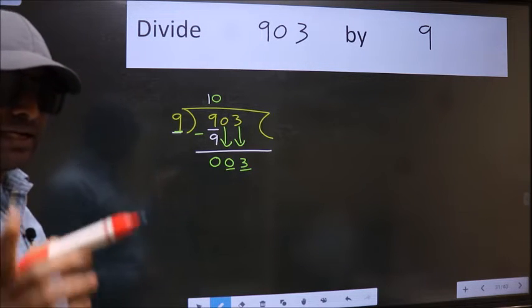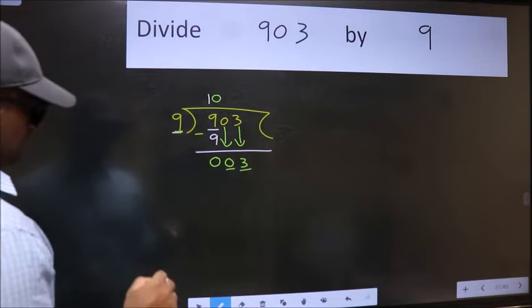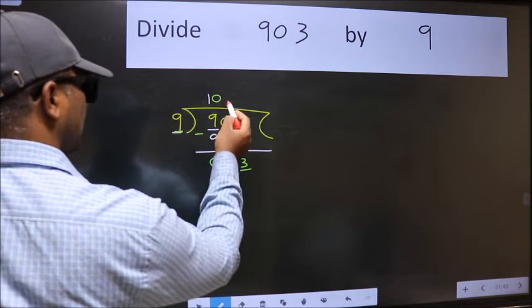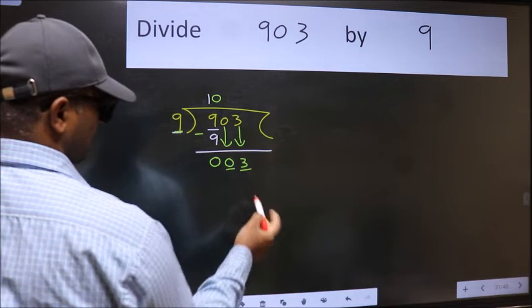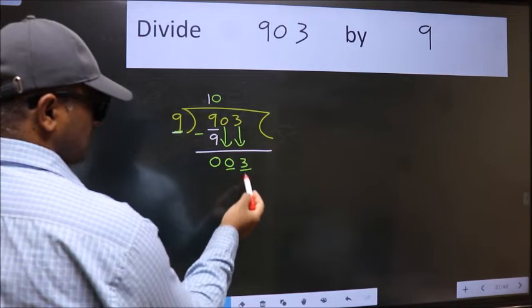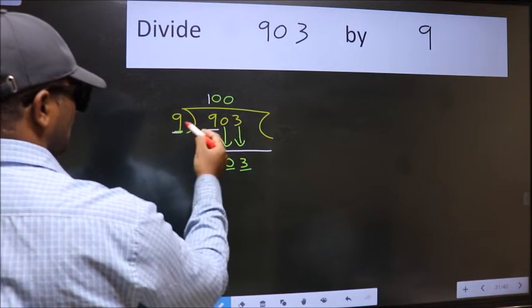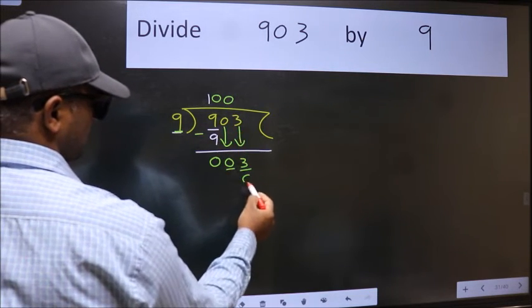Instead of that what we should think of doing is which number should we take here. If I take 1 we will get 9. But 9 is larger than 3. So what we do is we take 0. So 9 into 0. 0.